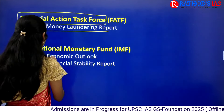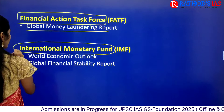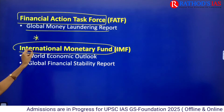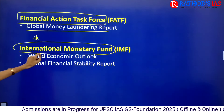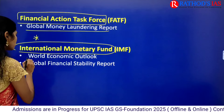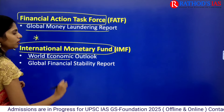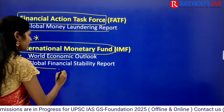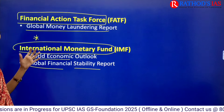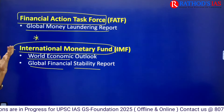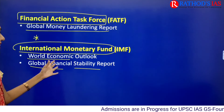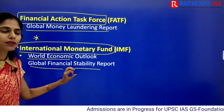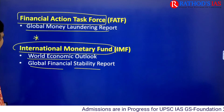Next is IMF — International Monetary Fund — which is very important. IMF releases two reports: the World Economic Outlook and the Global Financial Stability Report. Since IMF deals with economy and finance, it covers Economic Outlook and Financial Stability.